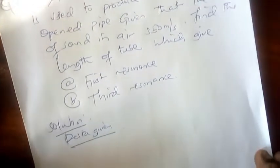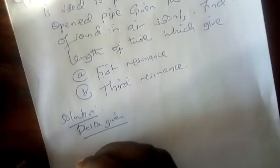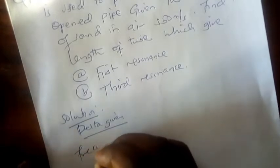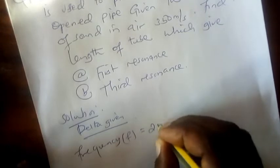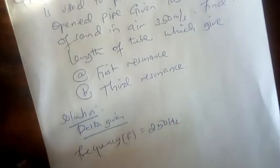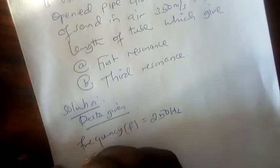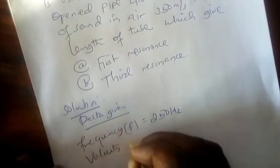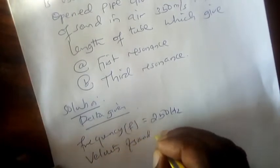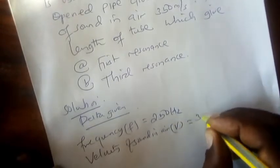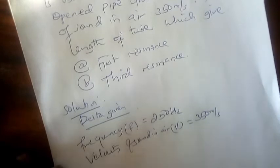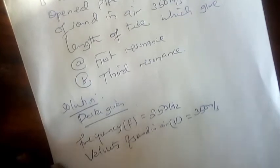The first data we have is the frequency. The first data given is frequency f equals 250 Hz. After that, the next thing we're given is velocity of sound in air, v equals 350 m/s. What are we asked to find? We are asked to find the length of the tube.